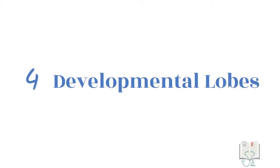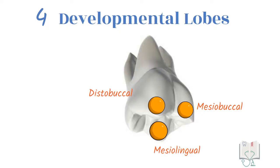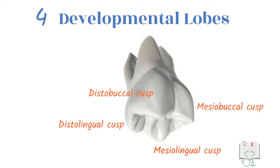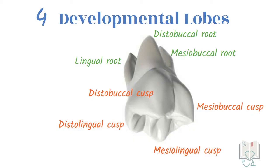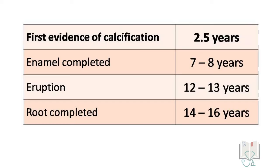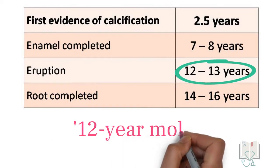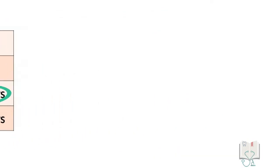It develops from four developmental lobes — mesiobuccal, distobuccal, mesiolingual, and distolingual — which give rise to four cusps respectively. It has three roots: mesiobuccal root, distobuccal root, and lingual root. Its function is grinding. In chronology, the tooth erupts at the age of 12 to 13 years, due to which it is sometimes called the 12-year molar.